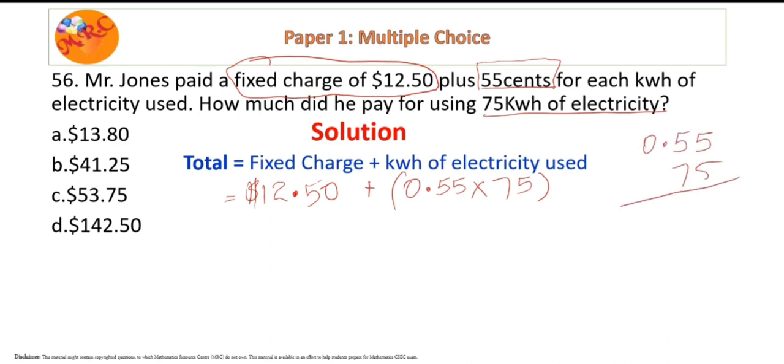5 times 5 is 25, 5 times 5 is 25, and 2 is 27. 5 times 0 is 0 plus 2 is 2. Good. Then we go with the next number which is 7. 7 times 5 is 35, change the 2 to a 3. 7 times 5 is 35, and 3 is 38. Change the 2 there to a 3, and 7 times 0 is 0 plus 3 is 3.